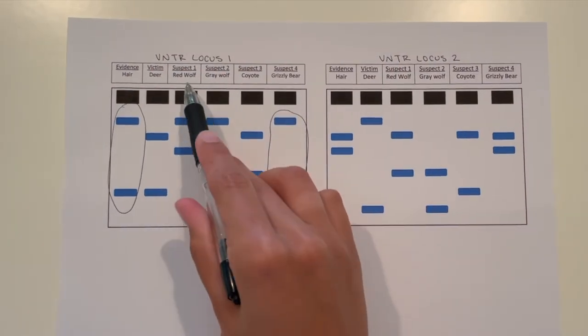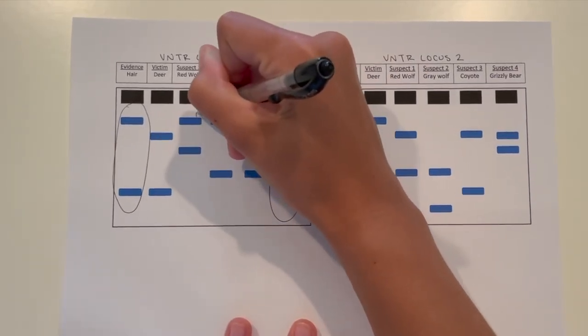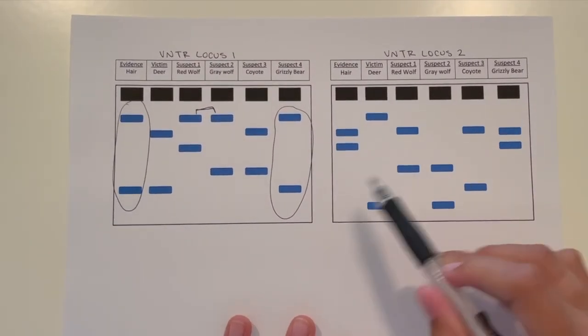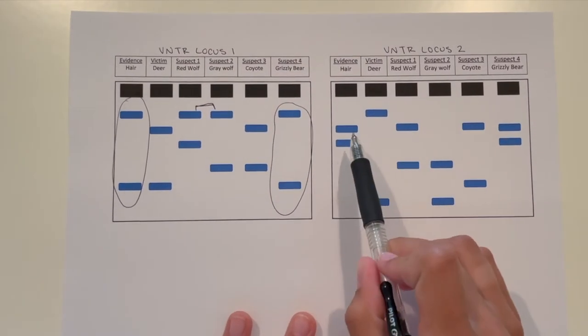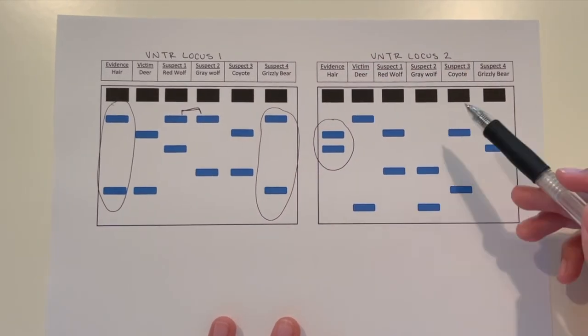And here we can see that red wolf and gray wolf both share one allele at the locus. We'll talk more about that in a second. So at VNTR locus 2, here is the evidence left at the crime scene.